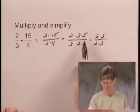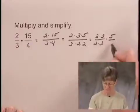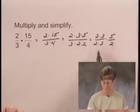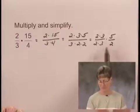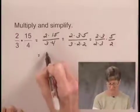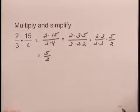And what remains in the numerator is 5, and what remains in the denominator is a factor of 2. 2 times 3 over 2 times 3 is equal to 1, so I have 1 times 5/2 or 5/2 for the product of 2/3 and 15/4.